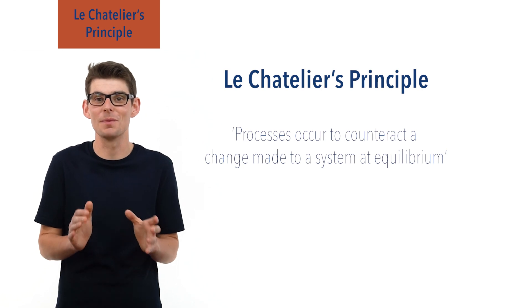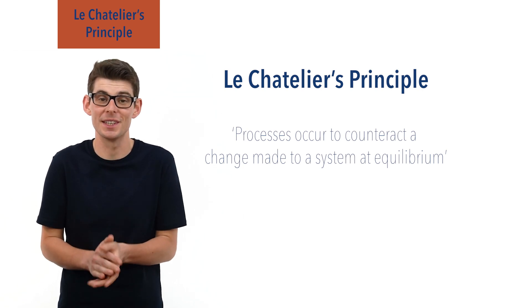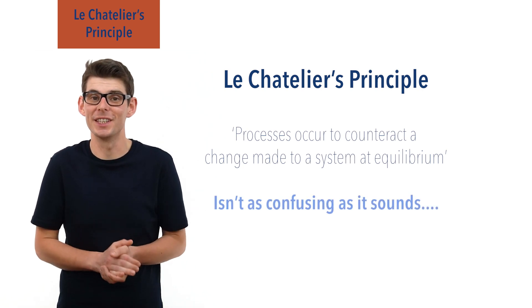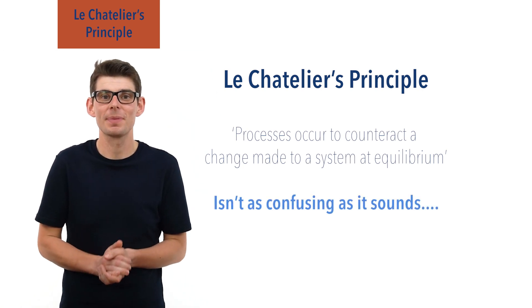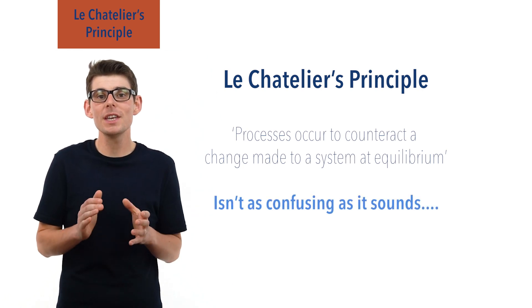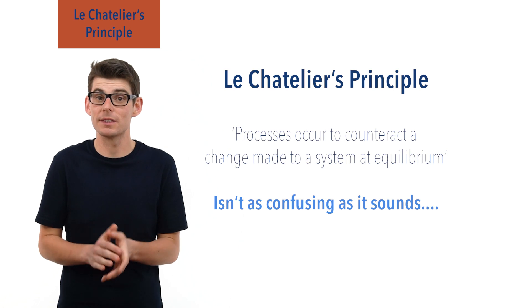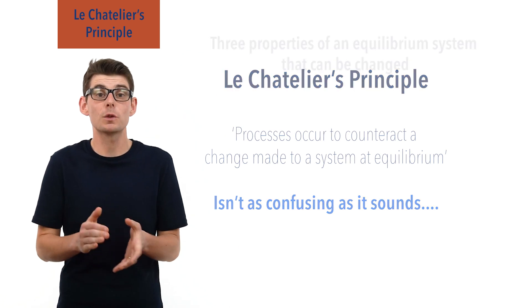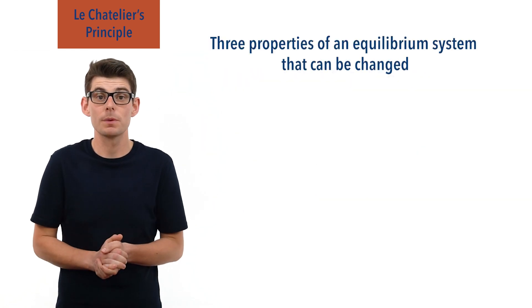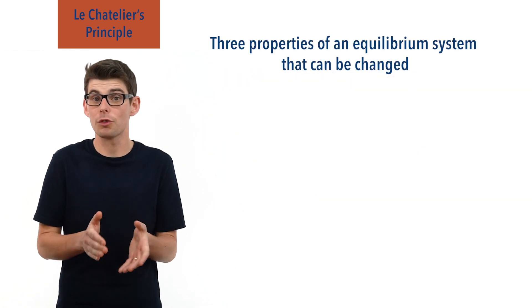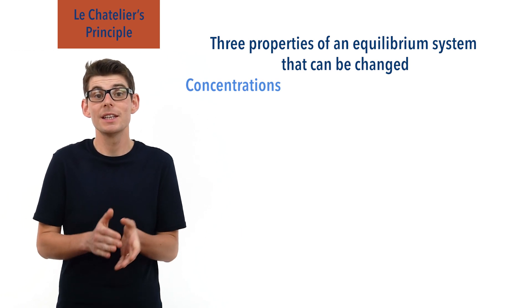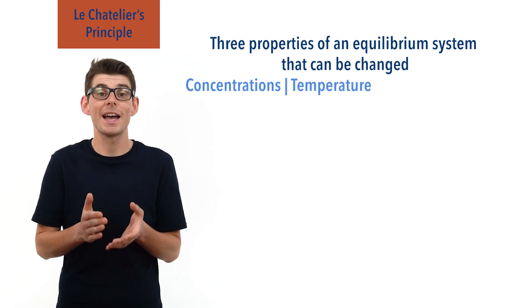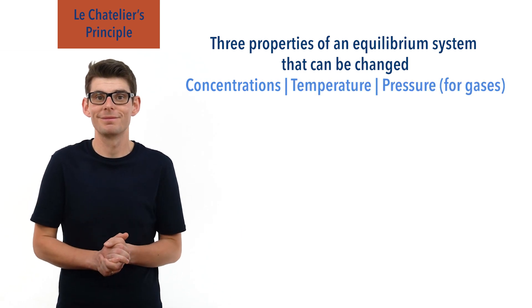It sounds much more confusing than it actually is. There are three key properties of a system at equilibrium that we can change: concentrations of reactants or products, temperature, and pressure.